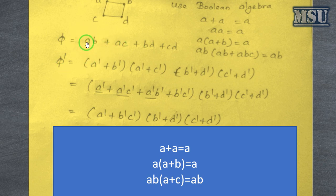So ab whole complement is by using the De Morgan's law, it becomes a complement plus b complement and ac becomes a complement plus c complement, b complement plus d complement and c complement plus d complement.